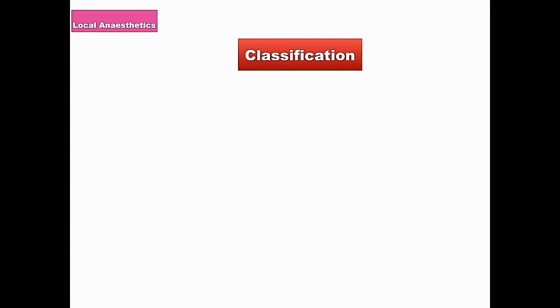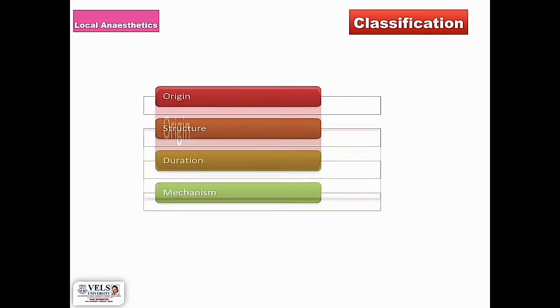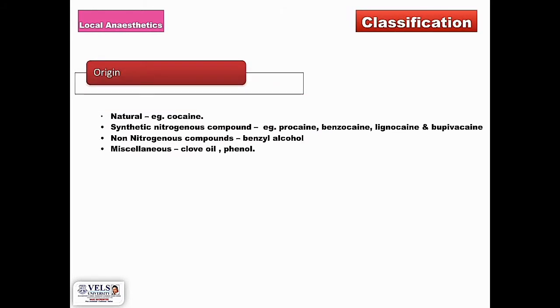Coming to the classification of local anesthetics, they can be classified based on their origin, based on the structure, based on the duration of action, and based on the mechanism of action. Let us take one by one in detail, first based on origin.